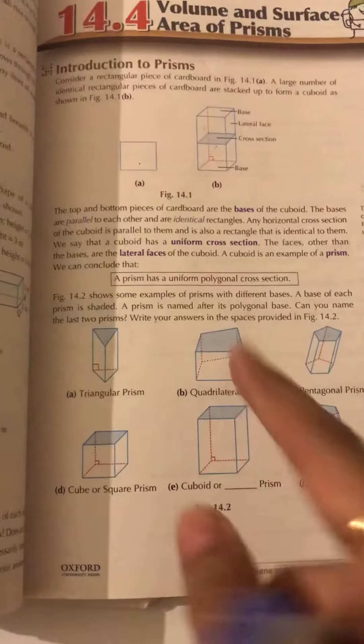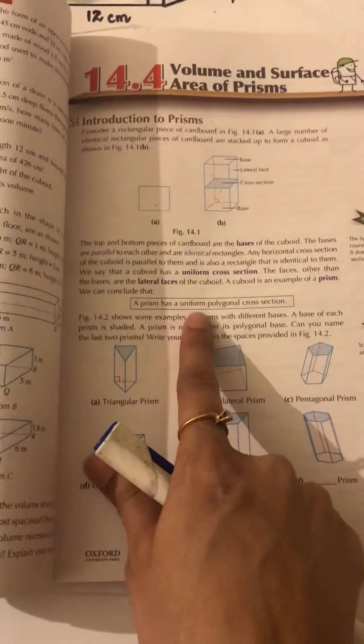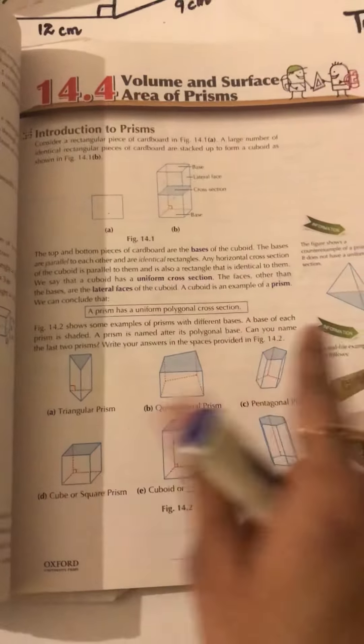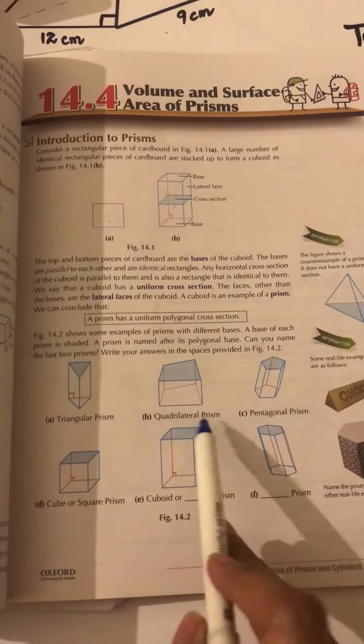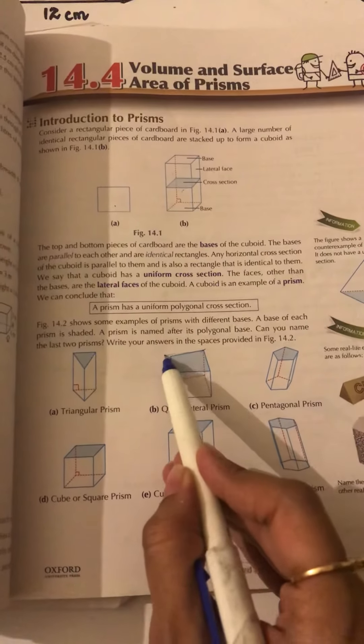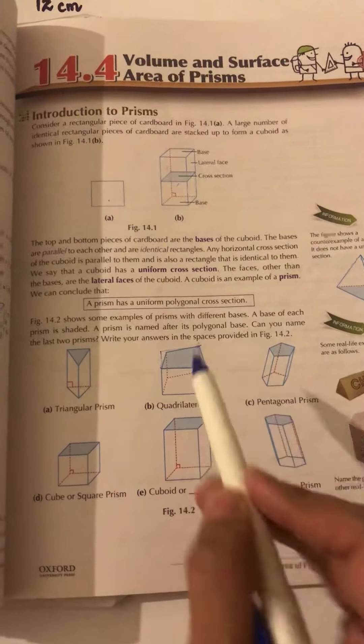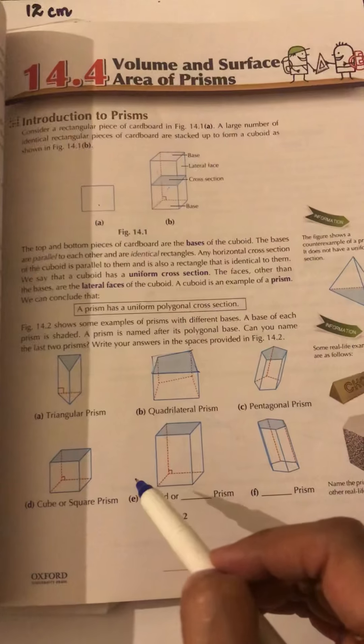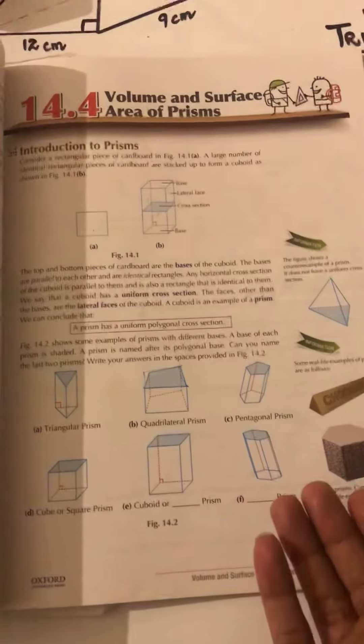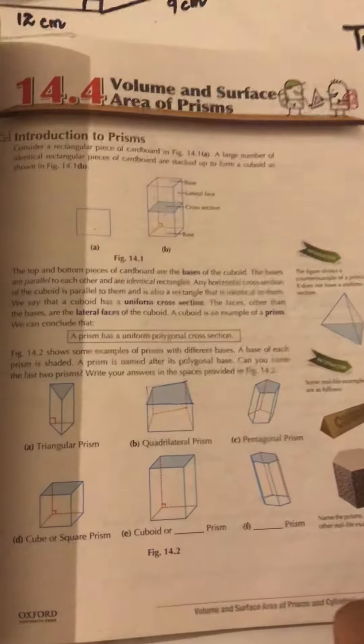Yes, that is what is called a prism has a uniform polygonal cross section. Secondly, quadrilateral - see the base of this prism is a quadrilateral. Quadrilateral means a shape which is having four sides, four corners, and four vertices, four angles.